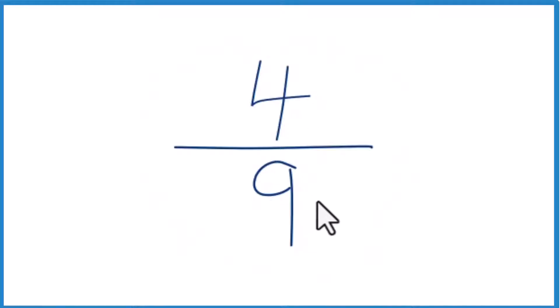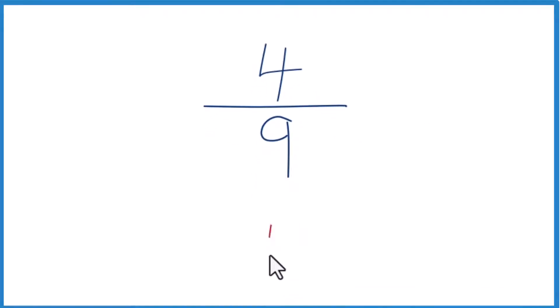So starting out, 4 divided by 9. Since 4 is smaller than 9, we know it's going to be less than 1. We're going to have a decimal here. So let's take 4 and see how many times 9 will go into 4. 9 doesn't go into 4, so let's make it 40, but then we have to put a decimal point up here.